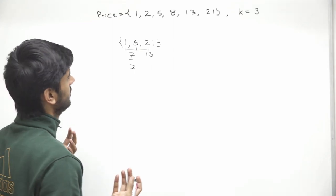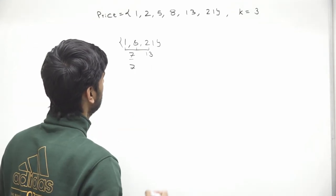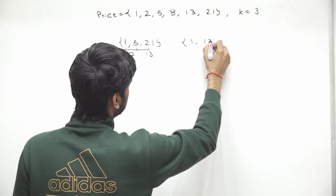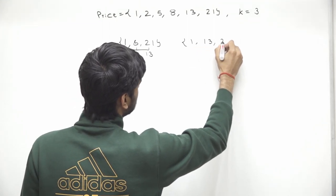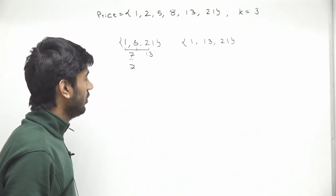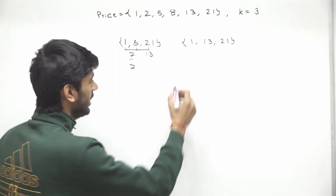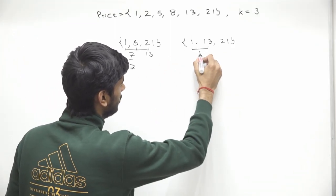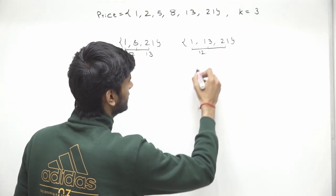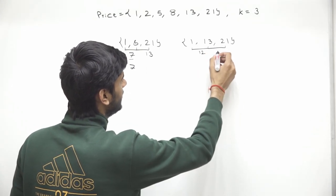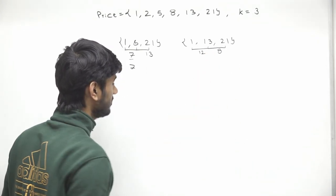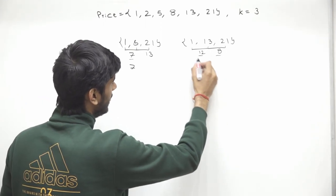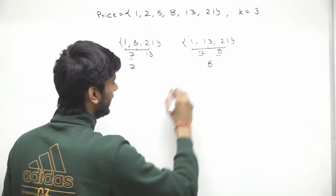Now let's pick some other elements. Say we pick 1, then 13, and then 21. What is the tastiness of this basket? The difference between 1 and 13 is 12, and the difference between 13 and 21 is 8. The minimum is 8, so the tastiness of this basket is 8.